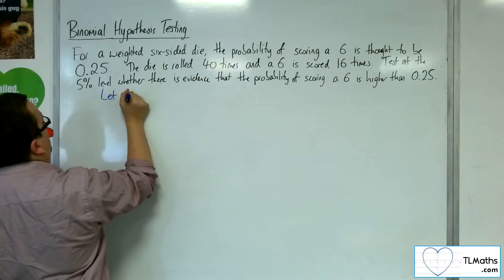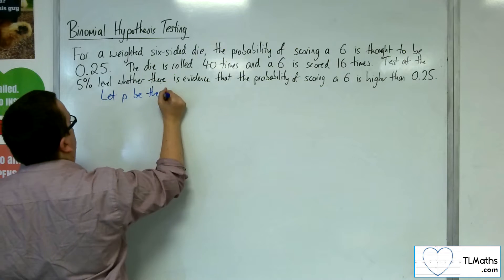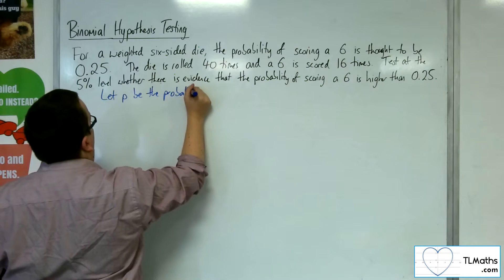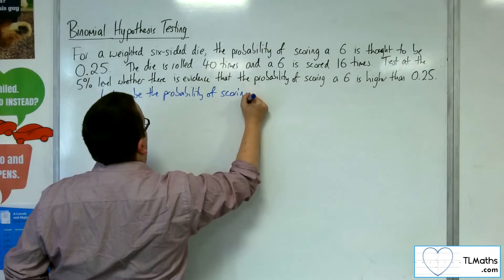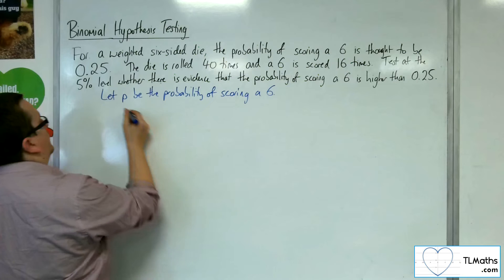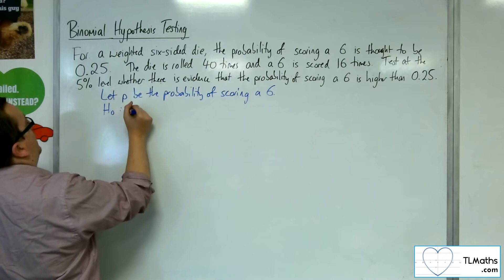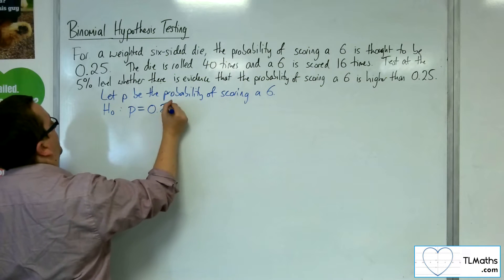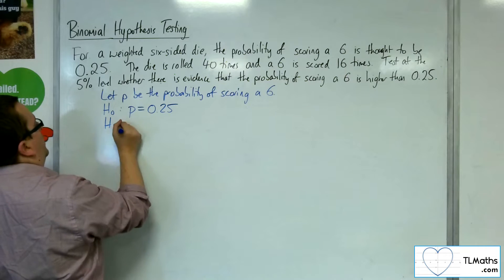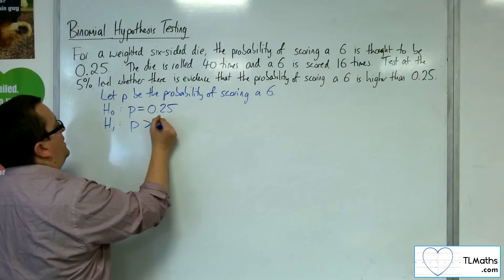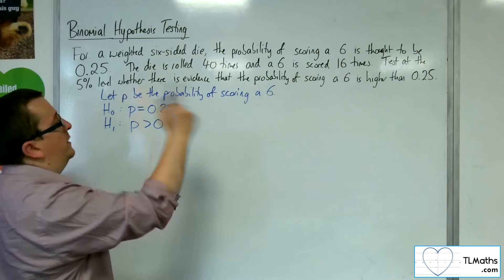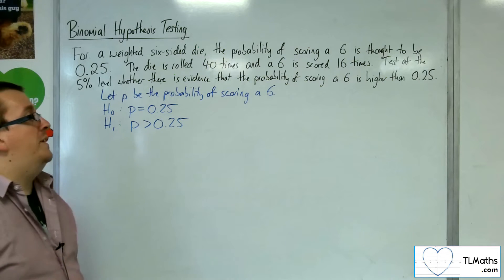Start off with let P be the probability of scoring a six. H0, the null hypothesis, would say that P is 0.25. The alternative hypothesis would be that it is higher or greater than 0.25, as that's what we're investigating.